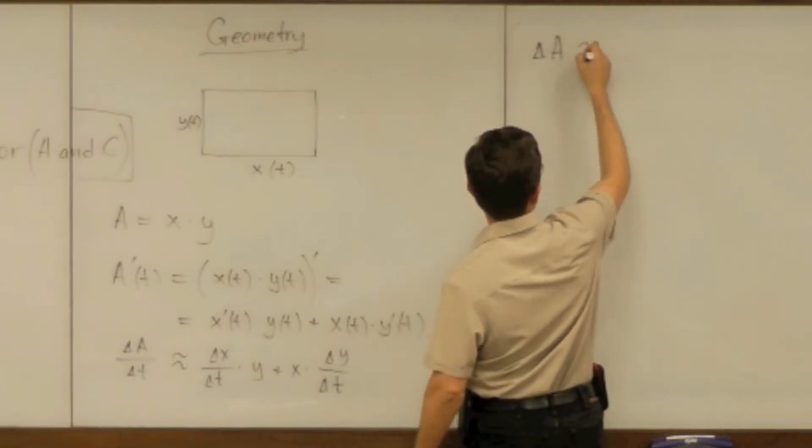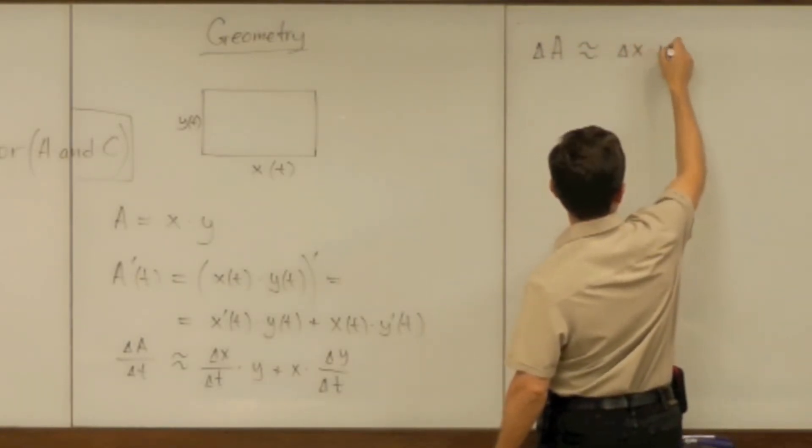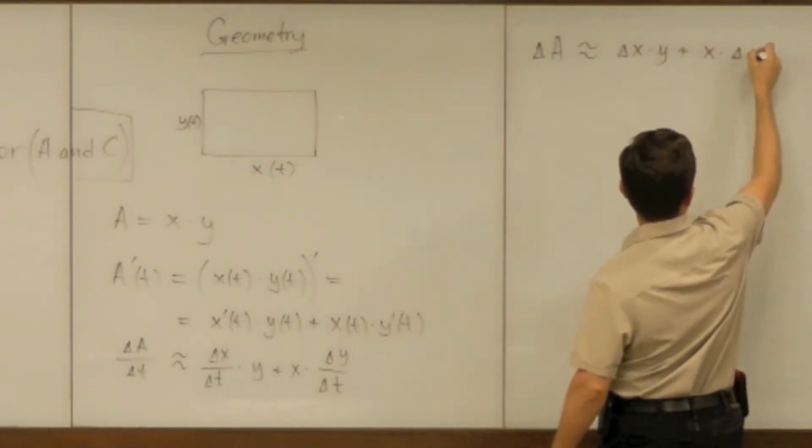delta a approximately equal to delta x times y plus x times delta y